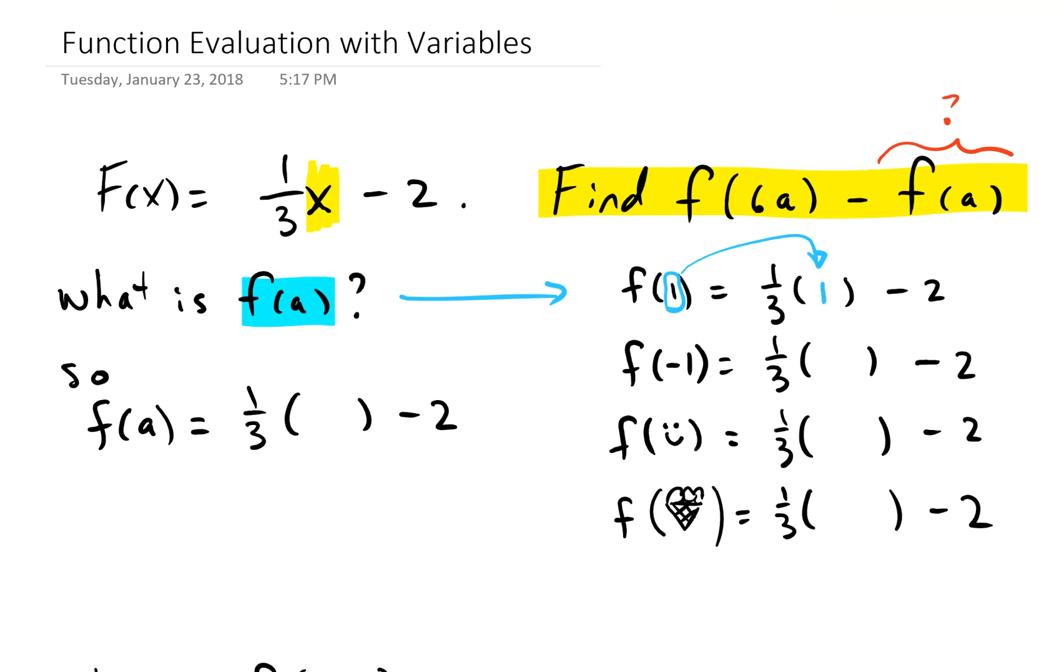Well, what is f of negative 1? Same thing—wherever there was an x, we plug in a negative 1, so we have 1/3 times negative 1 minus 2.